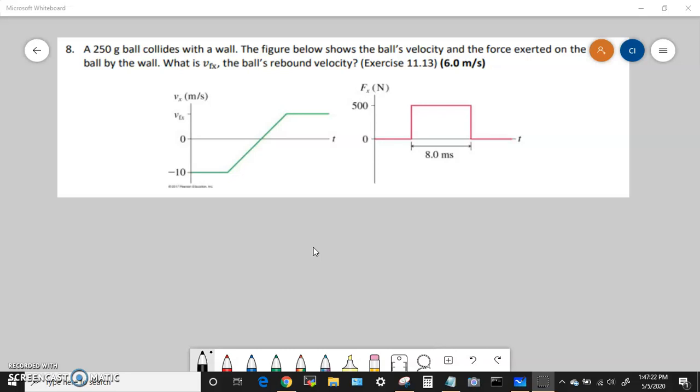So it's after the collision. From here to here, well in the time axis from there to there, we have the time the collision takes place. Essentially when the wall is making contact with the ball, and this time period is the same as this one. So the VFX is what we're looking for, which is the rebound velocity.